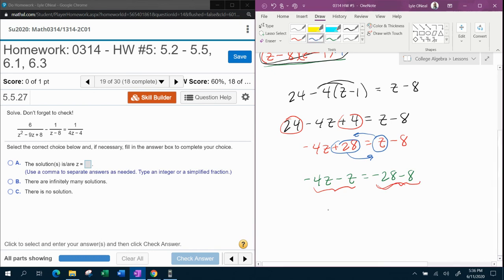So we're going to have negative 5z equals negative 36. Divide both sides by negative 5. And we're going to get z is, let's see, negative over negative makes a positive 36 fifths. And that will not reduce. And I believe it's okay to leave it improper.